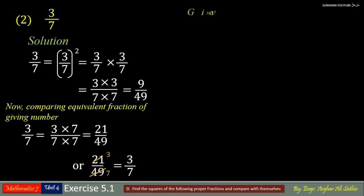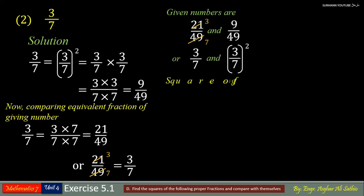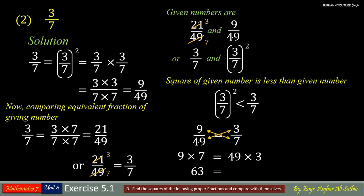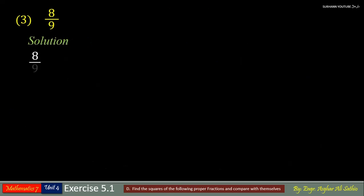Always remember: the square of the given number is always less than the given number. If it is difficult to know which number is less than or greater than, just do cross multiplication. So 63 means the square of 3 upon 7 is less than 147 means 3 upon 7. In the same way, solve all other problems by yourself.